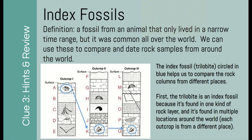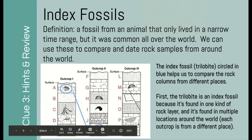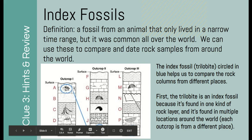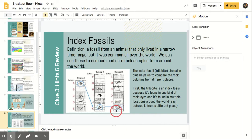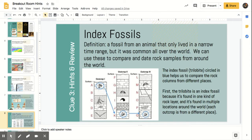What we can use is this trilobite. You can see that it lived here, it also lived here, and it also lived down here. You can also tell that the rock behind it is actually the same. That means the trilobite lived in the same time period across the world — in this time period, in this time period, and in this time period. So we can use this to date the rocks across the continents and line them up.